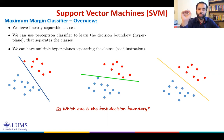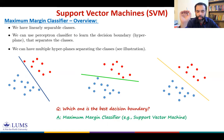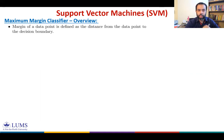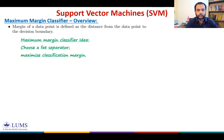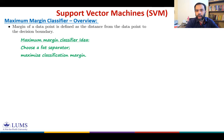This concept is known as the maximum margin classifier, and support vector machine is among one of the maximum margin classifiers. The margin of a data point is defined as the distance from any data point to the decision boundary. The idea of maximum margin classifier is that we choose a fat separator — instead of finding a thin hyperplane, we choose a fat hyperplane that maximizes the classification margin.